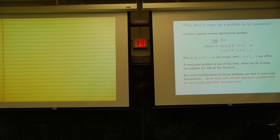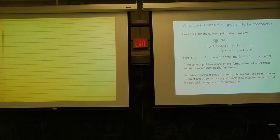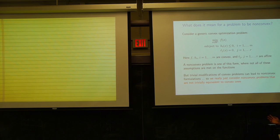What does it mean for a problem to be non-convex? We have the generic convex optimization problem where F is convex, the hi's are convex, and the lj's are affine. A non-convex problem is one where not all these assumptions are met — F could be non-convex, hi could be non-convex, lj could be non-affine. But we're going to consider problems that are not trivially equivalent to convex ones, because you can always take a convex problem and do something silly to turn it into a non-convex one.